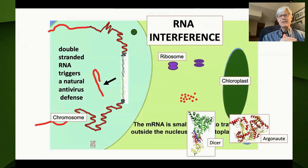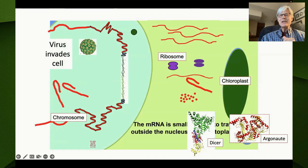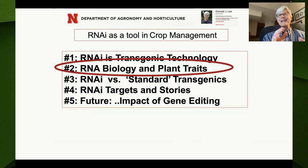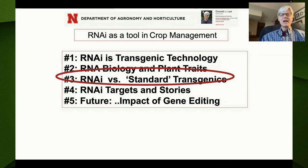The RNAi double-stranded RNA sequence is very similar to the virus sequences, so the RNAi process eliminates both of them. That was the discovered power of RNA interference. If you could introduce a gene into the plant and design it so it would form that double-stranded RNA, you would shut down all of the messages that have that particular sequence.